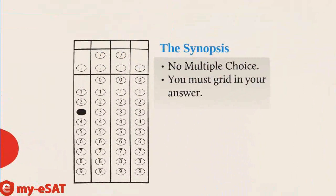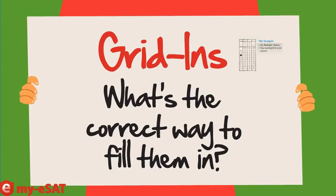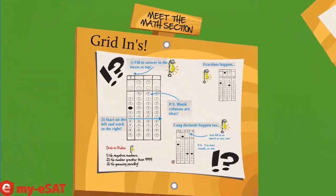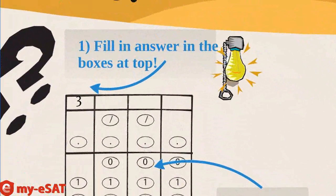Your griddins Scantron will look like this. Griddins are the only questions on the SAT where there is no multiple choice bubbles. You have to figure out the correct answer and fill it in on the answer sheet.